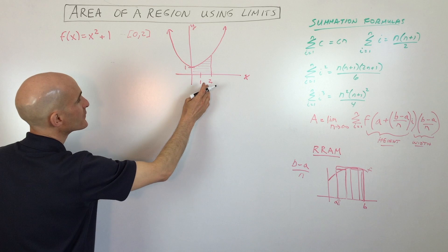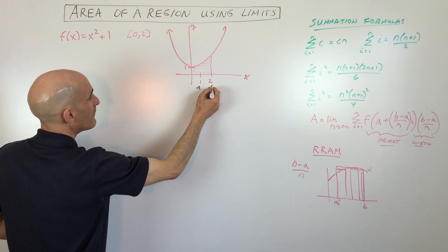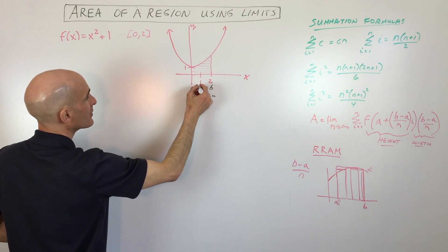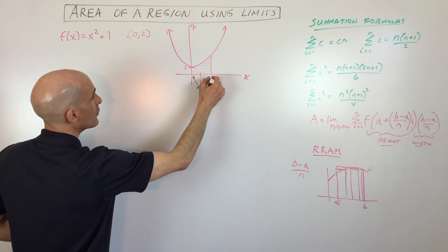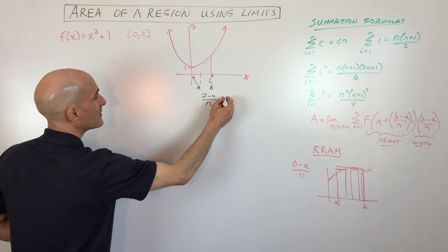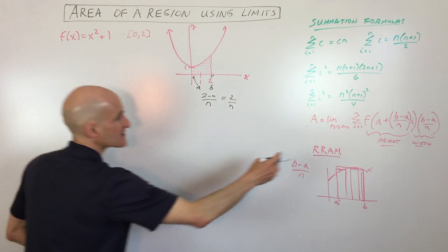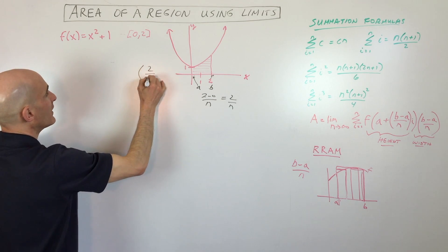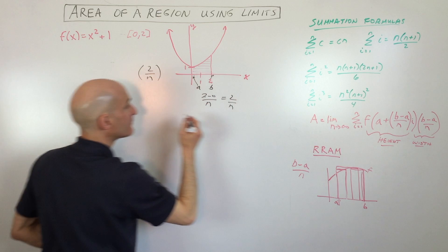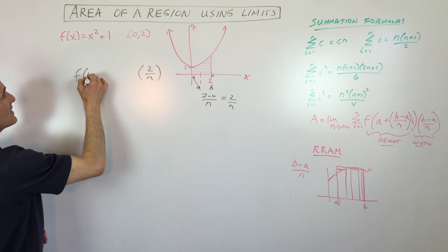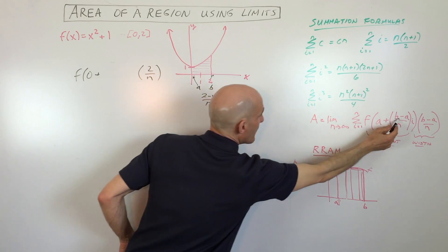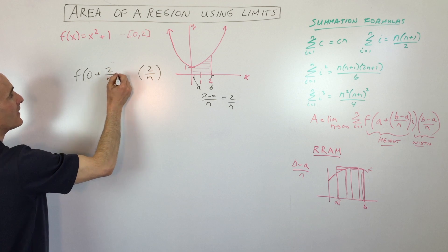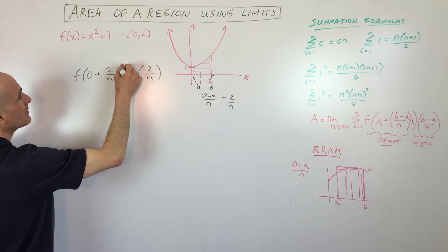We're going to use this formula. First, we have b minus a, which is two minus zero — a is zero and b is two. So two minus zero divided by n is two divided by n, which is the width of each rectangle. Then we have f of a, where a is zero, plus b minus a divided by n — which is two divided by n — times i. This represents the x coordinate. When we put it into the function, that gives us the y coordinate, or the height of our rectangle, and then we multiply by the width.